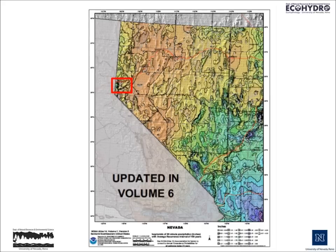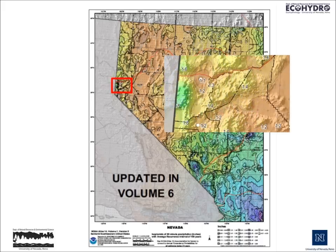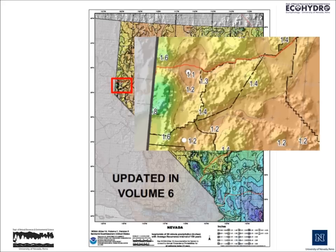Let's take a look at the map of the 100-year storm depth and duration, with a duration of 1 hour. For the Reno and Sparks area, the 100-year, 1-hour storm would have an intensity of about 0.8 to 1.6 inches per hour. So this means that in any given year, there's about a 1% chance that we would have a storm lasting 1 hour that would leave anywhere between 0.8 and 1.6 inches of rain on the landscape.